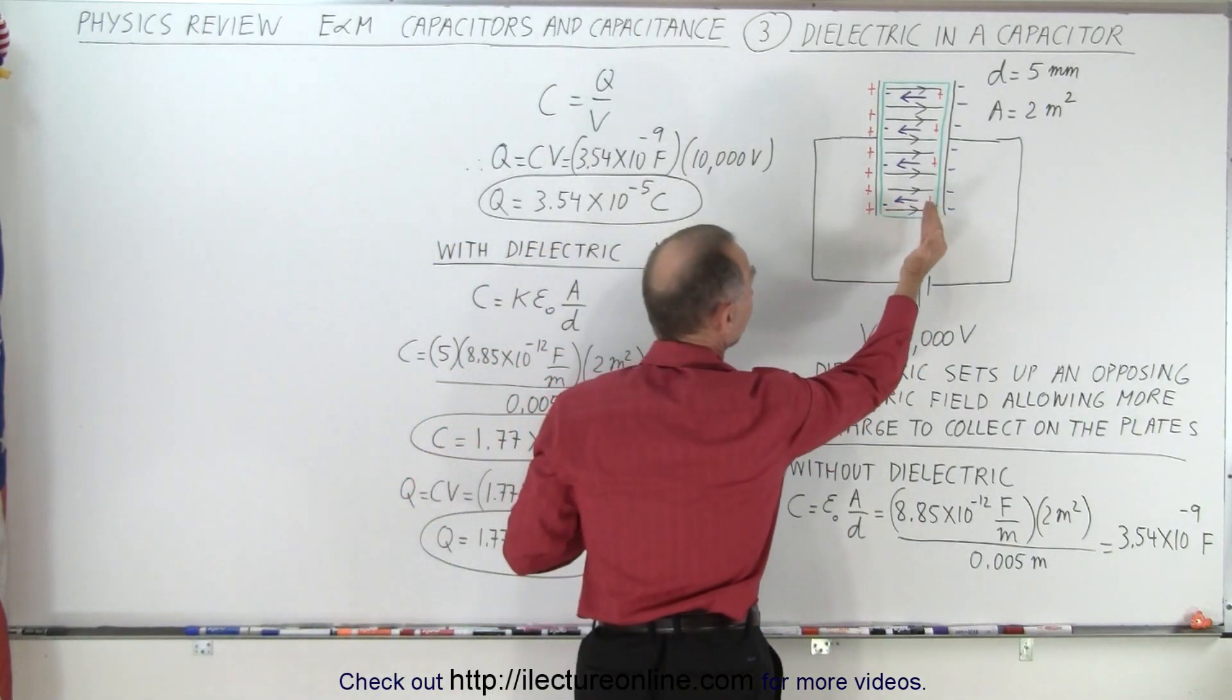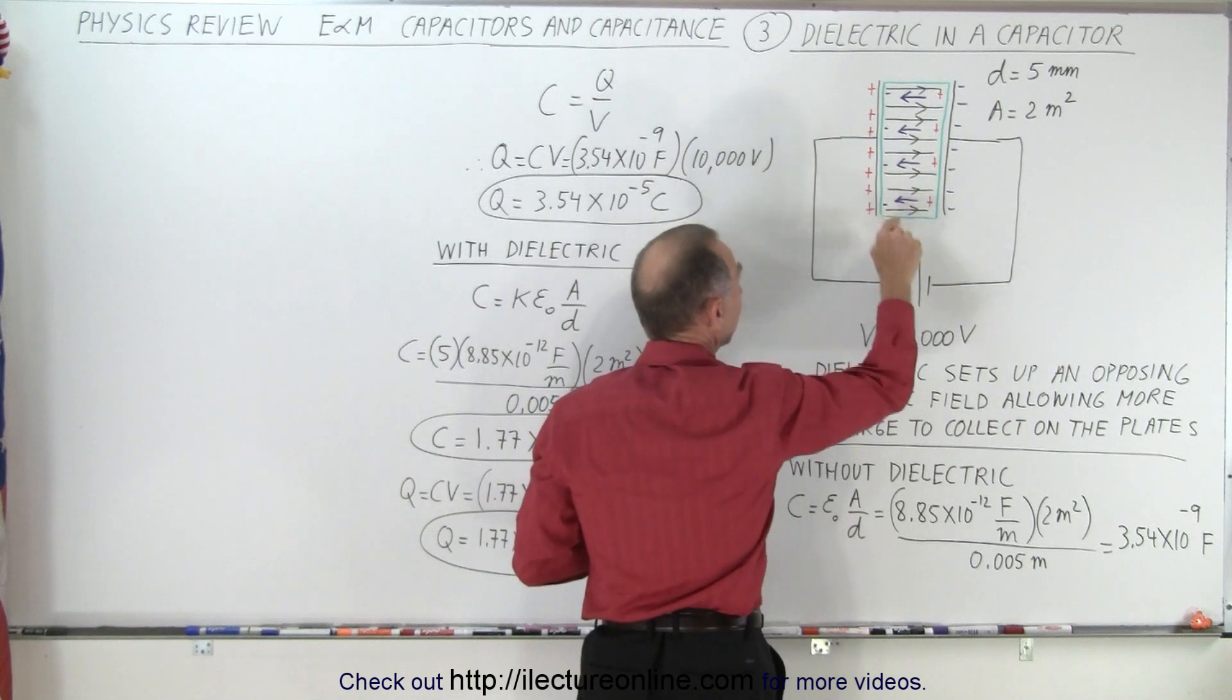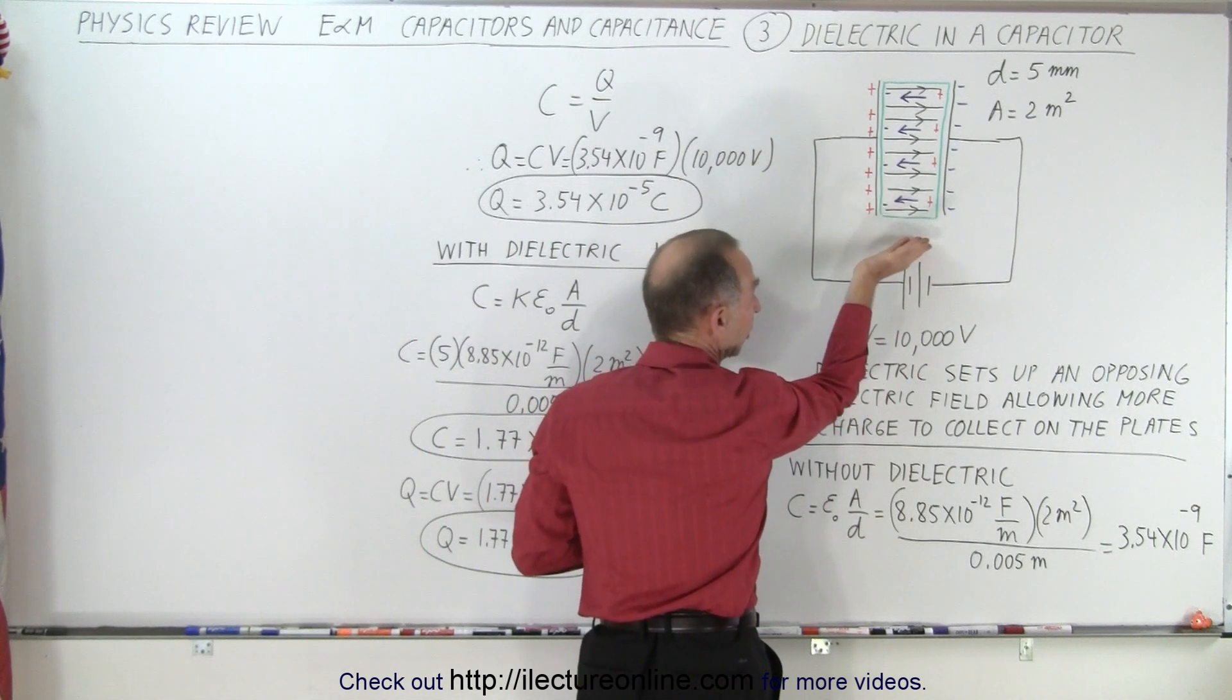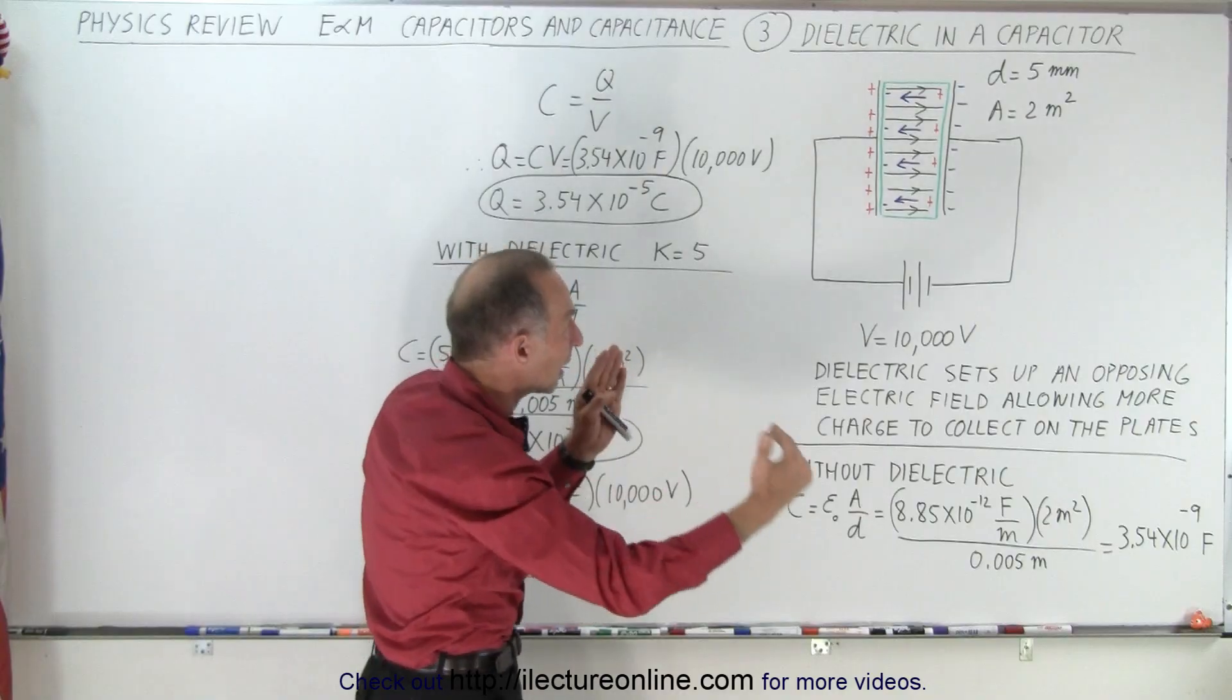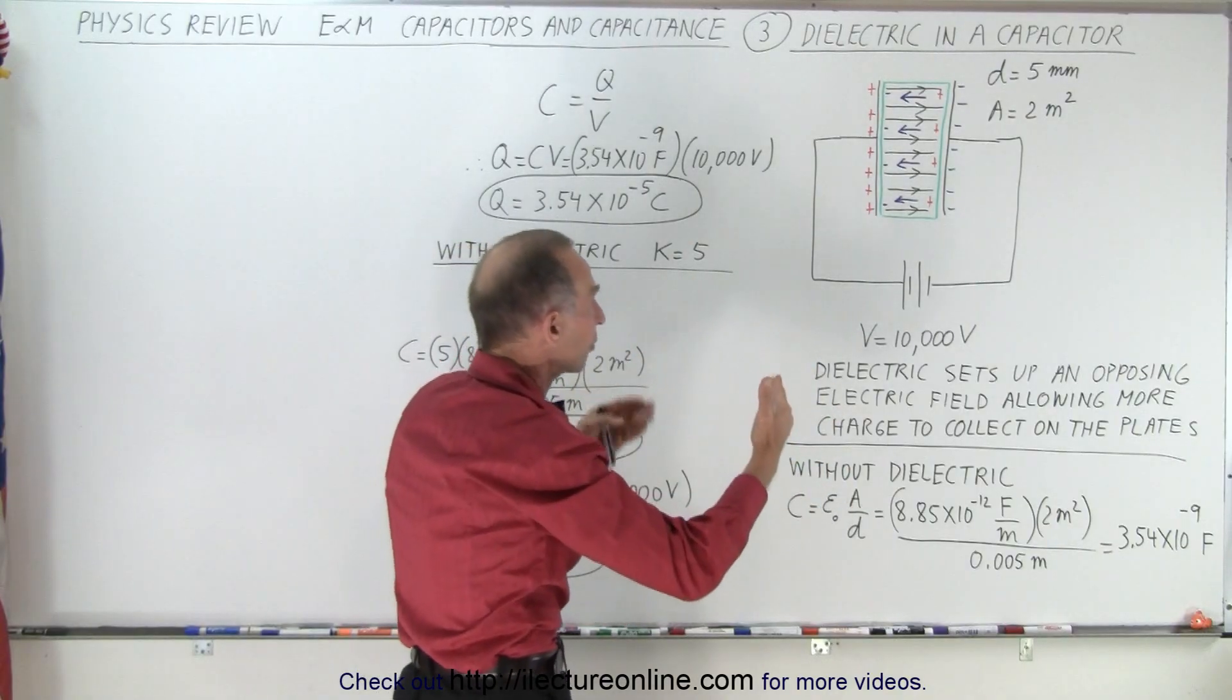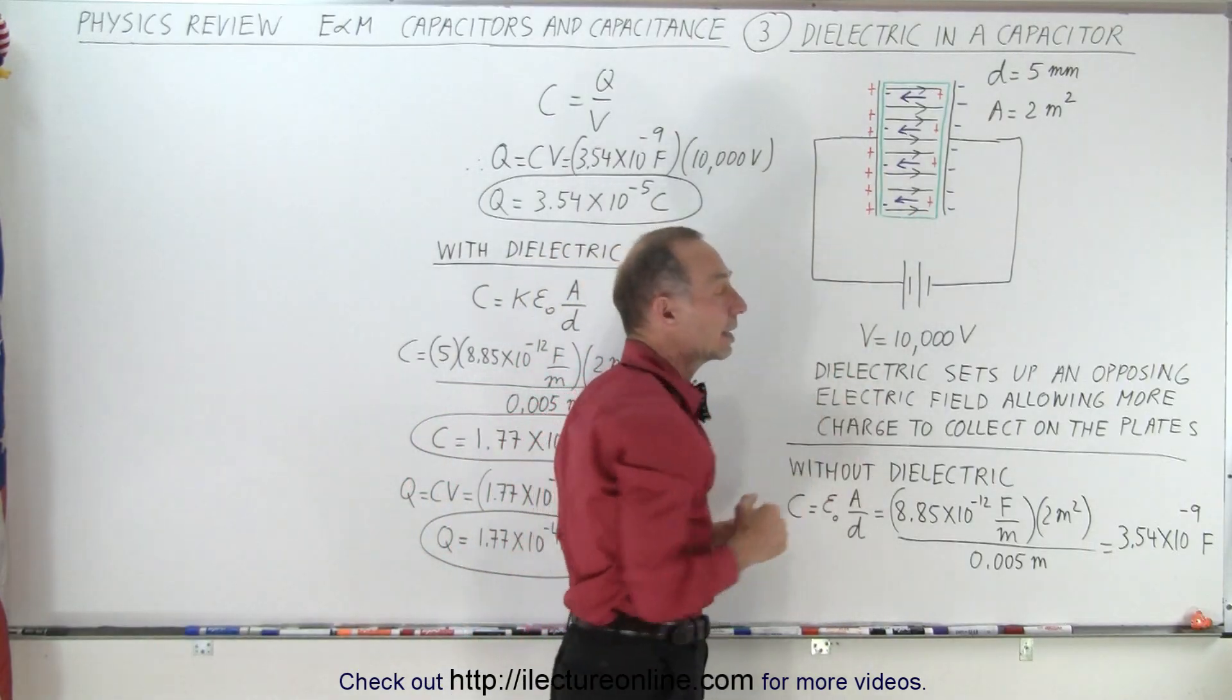So the negative charge of the molecule tends to turn towards the positive plate, and the positive charge of the molecule tends to turn towards the negative plate, so it sets up an electric field inside the dielectric that opposes the original electric field caused by the charge on the plates.